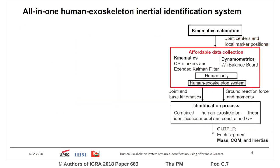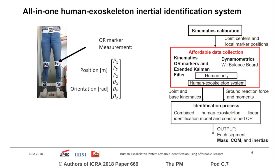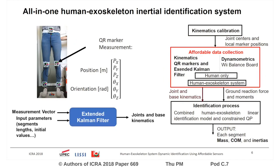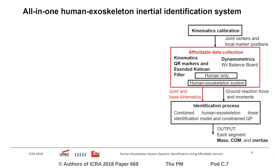A second phase consisted of kinematics and dynamometrics data collection. For the kinematic data, the same markers detection technique was used, and the markers' measured pose was introduced into an extended Kalman filter in order to estimate the joint angle-based kinematics.